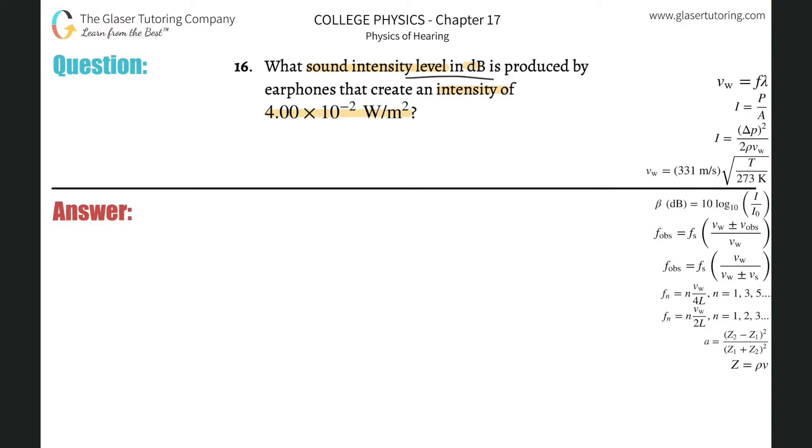So we have this: beta, which is measured in decibels, will be equal to 10 multiplied by the log to base 10 of the intensity that we're hearing, divided by the threshold of hearing, which is I sub 0.